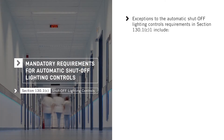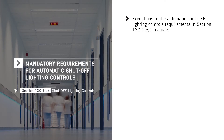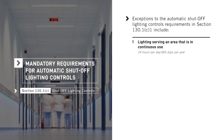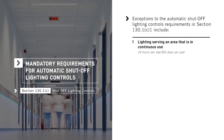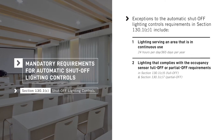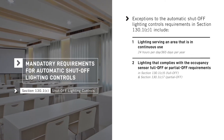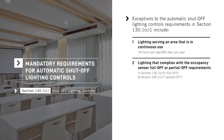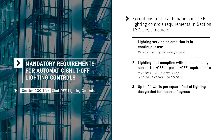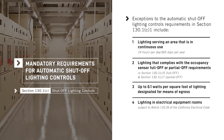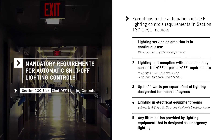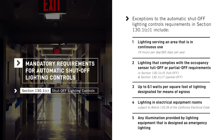There are a few exceptions to the automatic shutoff lighting controls requirements in Section 130.1c1. These include lighting serving an area in continuous use 24 hours per day, 365 days per year; lighting that complies with the occupancy sensor full-off requirements in 130.1c5 or partial-off requirements in 130.1c7; up to 0.1 watts per square foot of lighting designated for means of egress; lighting in electrical equipment rooms subject to Article 110.26 of the California Electrical Code; and any illumination provided by lighting equipment designed as emergency lighting.